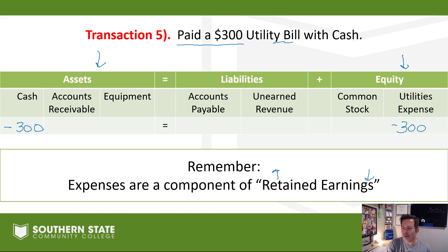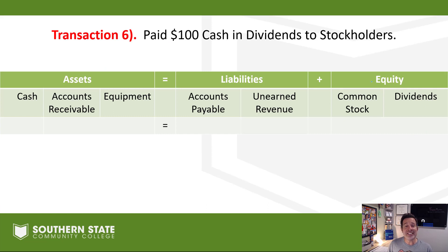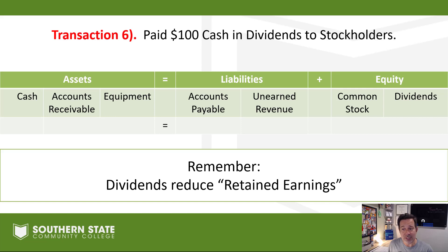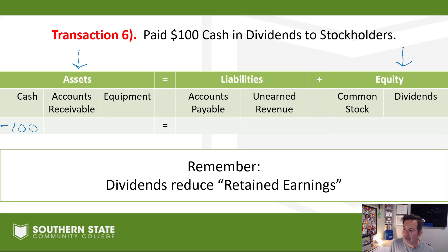One more transaction: number six, we paid $100 worth of dividends to the stockholders. When a company pays dividends, it's giving profits back to shareholders — it's not an expense and not revenue; it has its own separate account called dividends. Dividends reduce retained earnings. Our cash account goes down $100, so assets go down $100, and equity goes down $100. Every transaction, the accounting equation stays in balance.